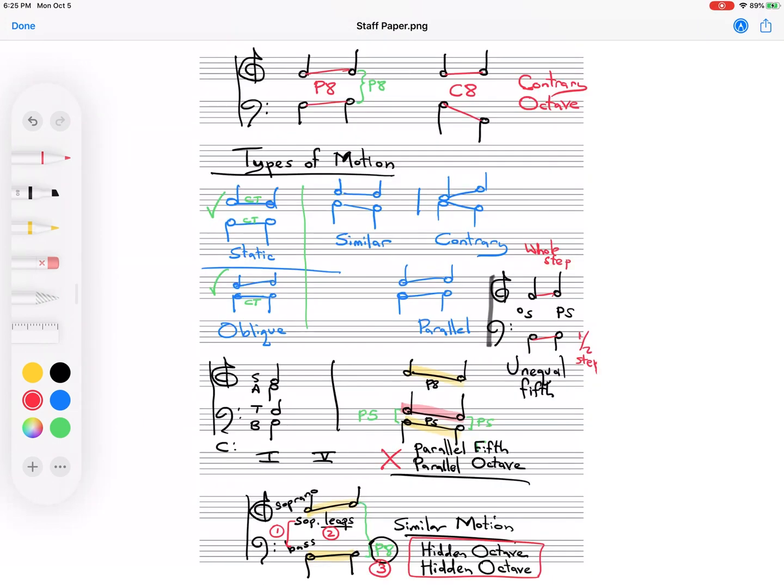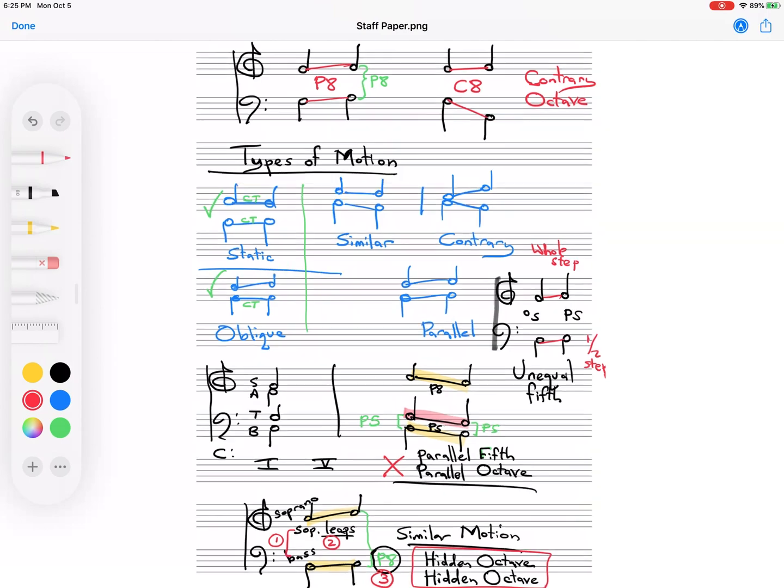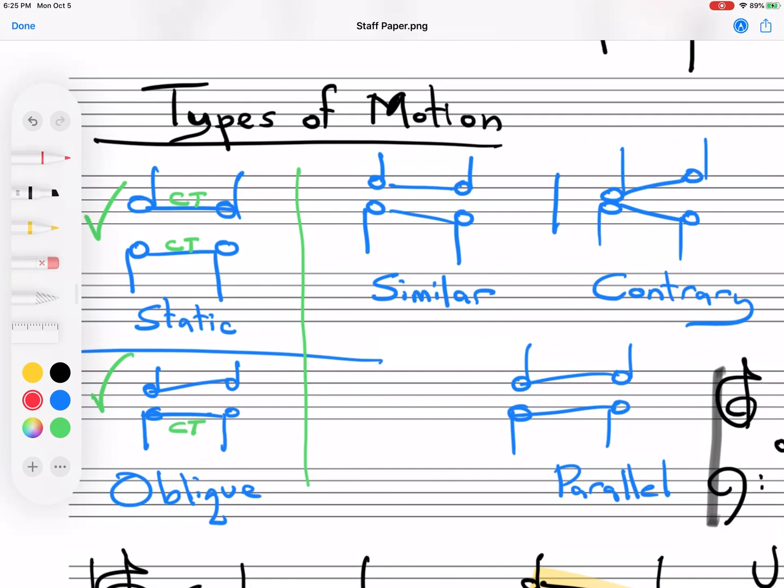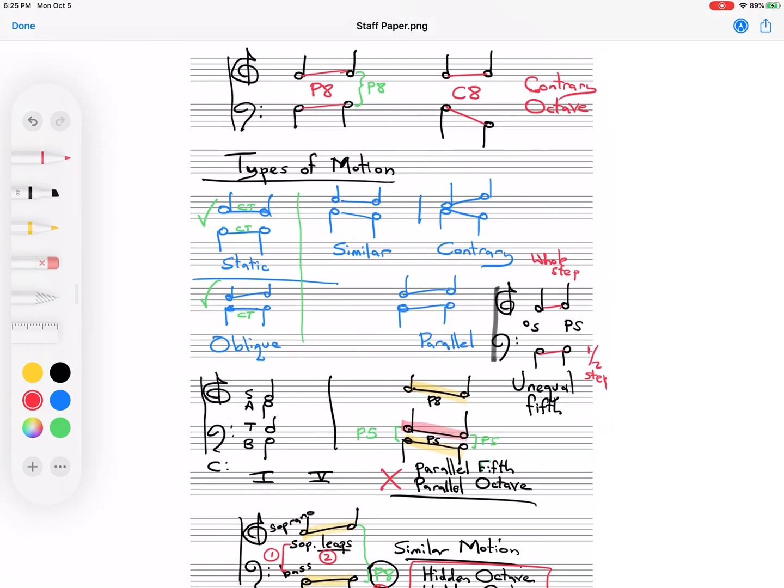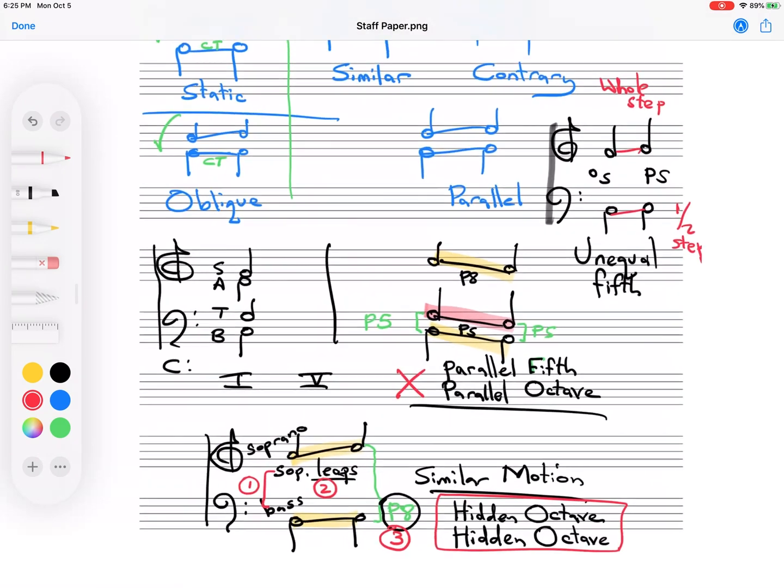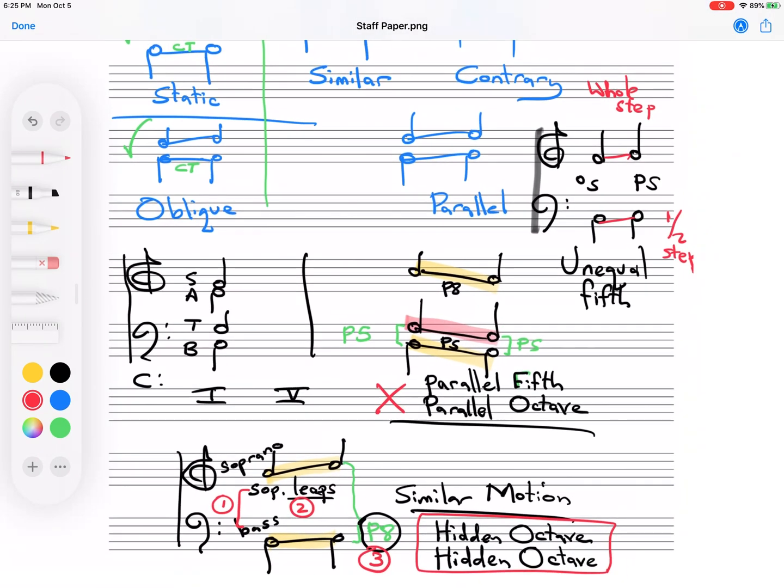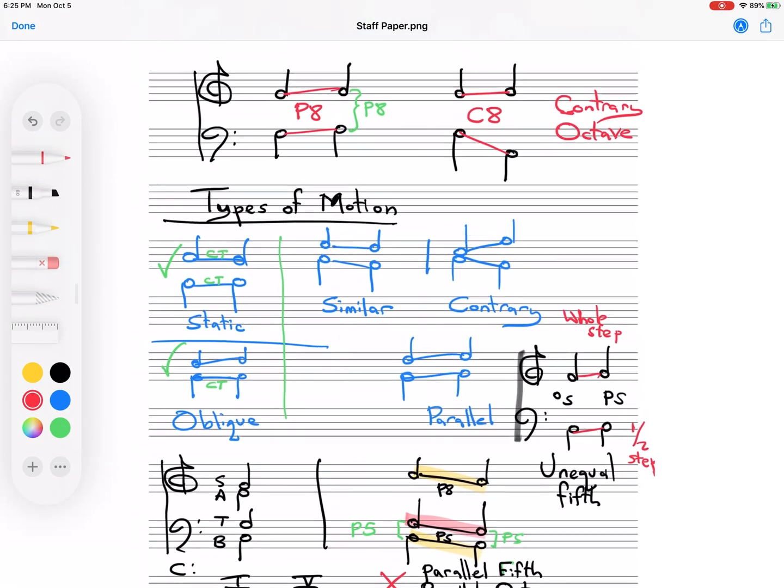Sounds a little bit like the hidden fifth. But in this case, the soprano is stepping. Go ahead and review these five types of motion. Make sure you understand these five types. And then take a look at the different types of motion that are not allowed. We're going to be analyzing music by looking at the types of motion in it. And we're going to be writing. Hopefully, avoiding these pitfalls, these parallels, which reduce the texture of the music.